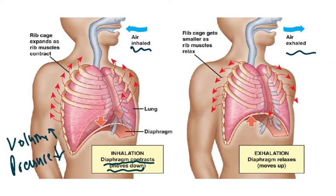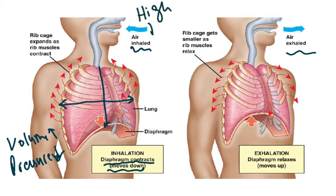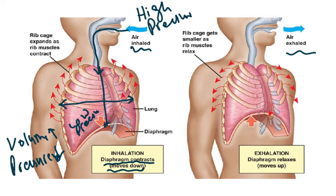Volume increases because the diaphragm moves down, and also because the rib cage moves upwards and outwards. When the volume increases, the pressure decreases and the air moves in because there is high pressure outside and low pressure inside the thorax. So air moves in from high pressure to low pressure.